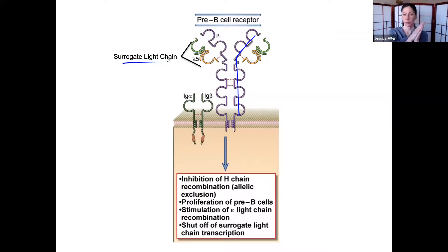First, you are a pro B cell. Let's start this heavy chain rearranging process. If you're successful, let's test it out. We're going to just use a surrogate light chain, almost like a fake patient here.